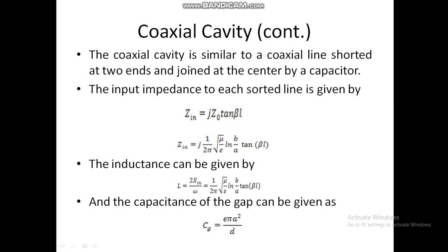The coaxial cavity is similar to a coaxial line shorted at two ends and joined at the center by a capacitor. To calculate the input impedance of each shorted line, we use the formula: Zin = jZ₀ tan(βl). Substituting the value of Z₀, this becomes: Zin = j × (1 / 2π) × √(μ/ε) × ln(b/a) × tan(βl).